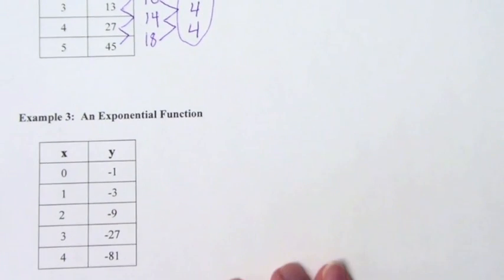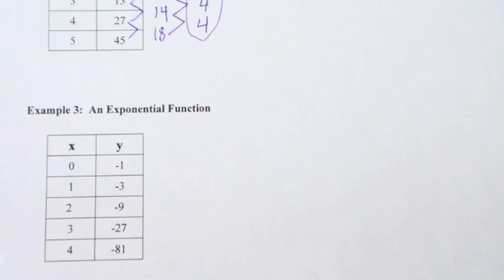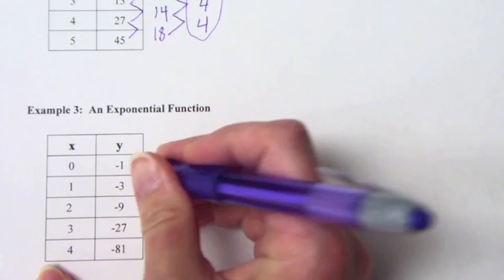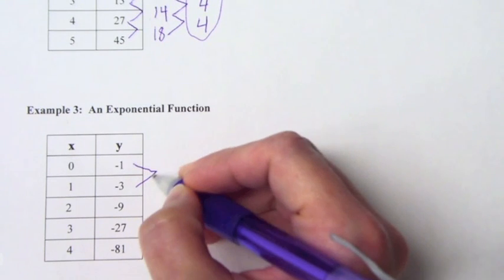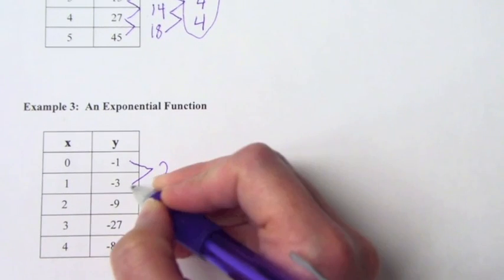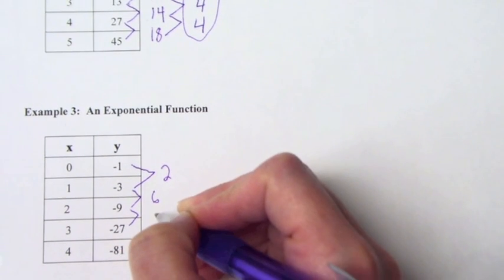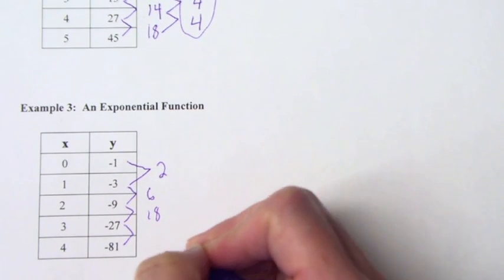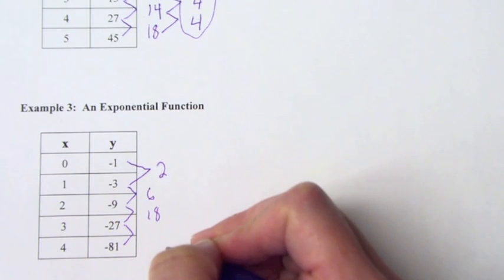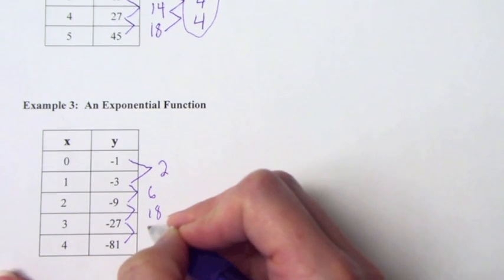Example 3. This one, what do we think this one's going to be? It's going to be exponential and let me show you why. Here's what you're going to do on these. You're going to look at the difference in your data. See, this is the process you want to take on all of these. We're going to look at the difference. Well, this one, the difference is 2. This one, the difference is 6. This one, the difference is 18. On these two, the difference is 54.